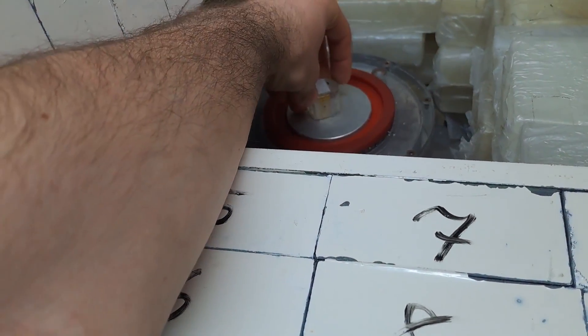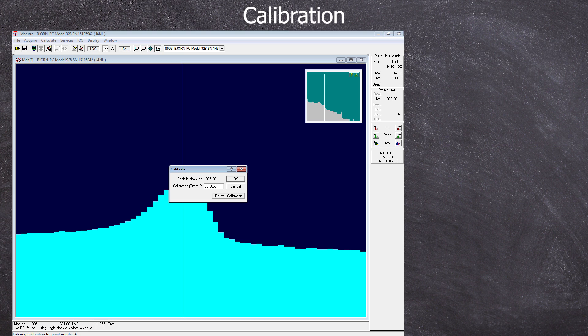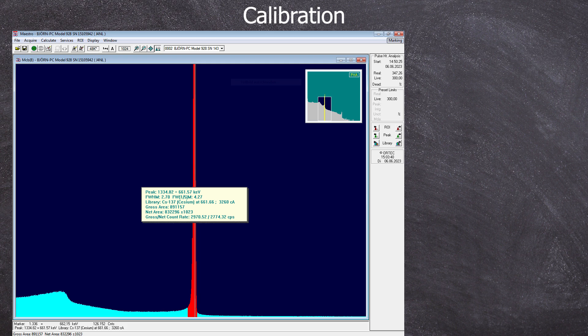Next, we move to Cesium-137. Here, we also have a very distinct peak. We can assign the energy of 661 keV to the channel 1335. Note that the program only accepts periods and not comma. The background corrected counts measured in the ROI were 2774 counts per second in total.